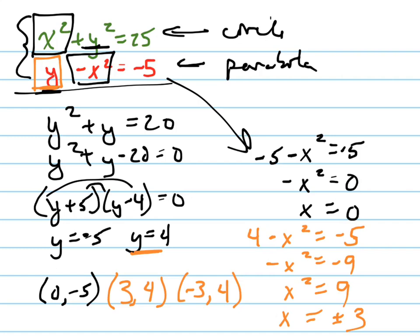And so I have 3 solutions for this system of equations. And just for good measure, I check them by plugging them in up here. If I plug in 0 to the green equation and negative 5, I will get 25. And if I plug in negative 3 and positive 4, I get the right equation. I get the solution works as well.